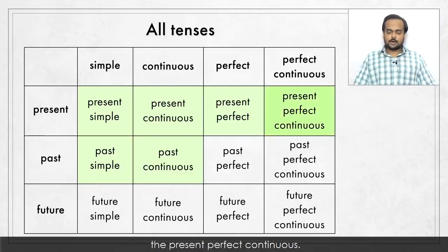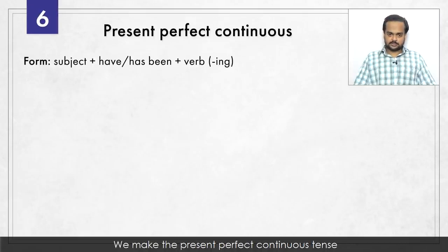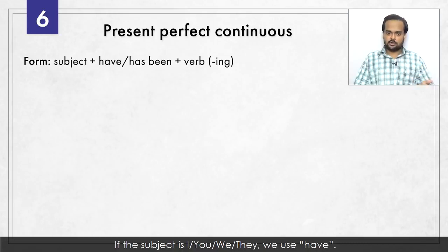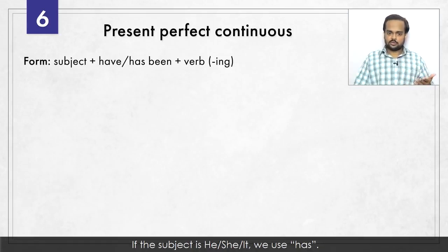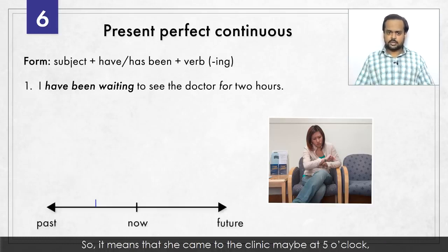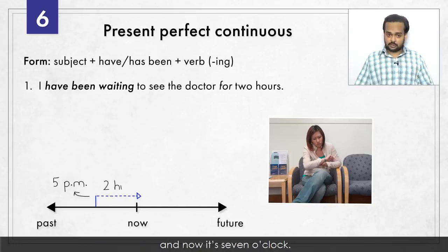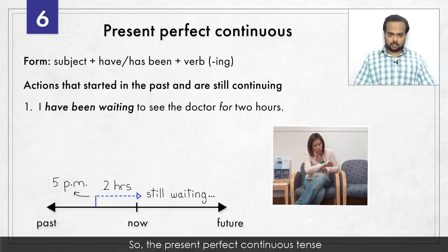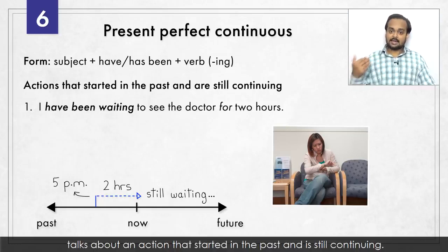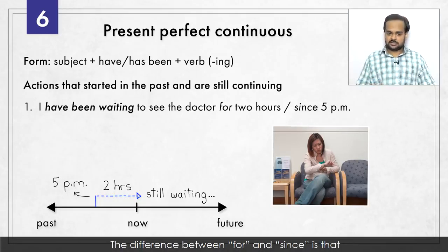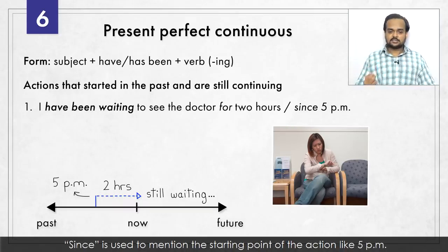Let's now move on to the present perfect continuous. We make it with a subject plus have or has been plus a verb in -ing form. For example: I have been waiting to see the doctor for two hours – she came at 5 o'clock, it's now 7 o'clock, and she is still waiting. So this tense talks about an action that started in the past and is still continuing. We can also say: I have been waiting since 5 p.m. The difference between 'for' and 'since' is that 'for' talks about the amount of time, while 'since' mentions the starting point of the action.